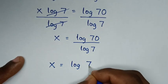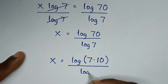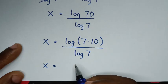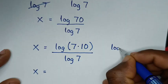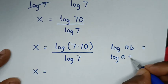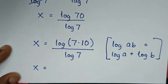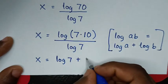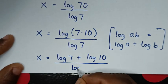70 can be written as 7 times 10, so x is equal to log of 7 times 10, over log of 7. This part is in the form of log of a times b, which is equal to log of a plus log of b. So it will be log of 7 plus log of 10, over log of 7.